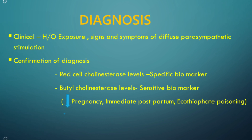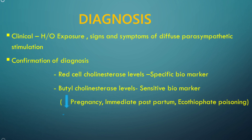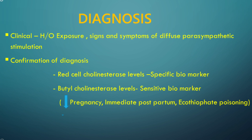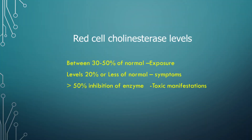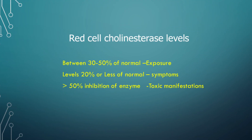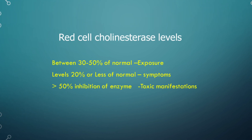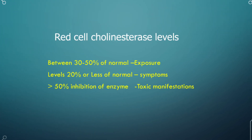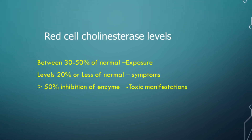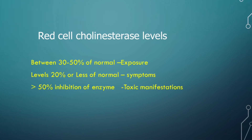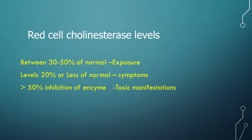Pseudocholinesterase levels can decrease in other conditions like pregnancy, immediate postpartum, and carbamate poisoning. As guidelines used in clinical practice: if red cell cholinesterase levels are between 30–50% of normal, it indicates exposure. If levels are 20% or less of normal, symptoms will occur. If there is more than 50% inhibition of the enzyme, toxic manifestations occur.